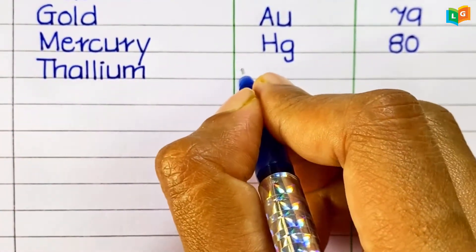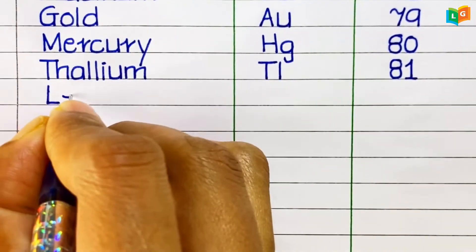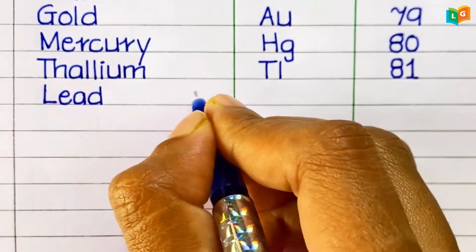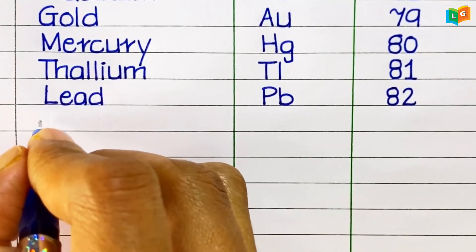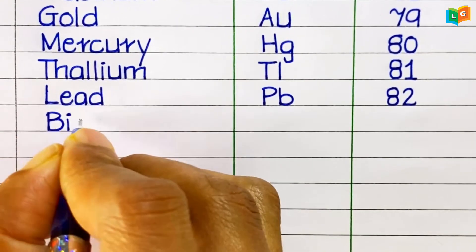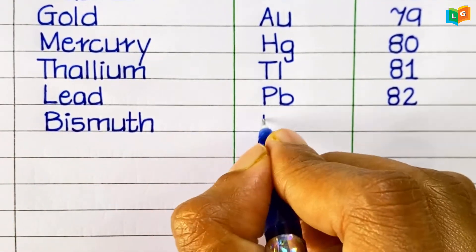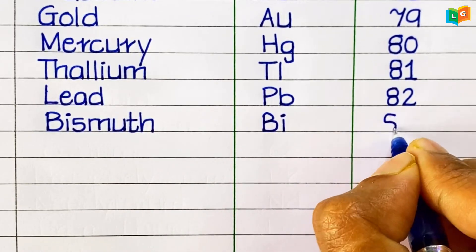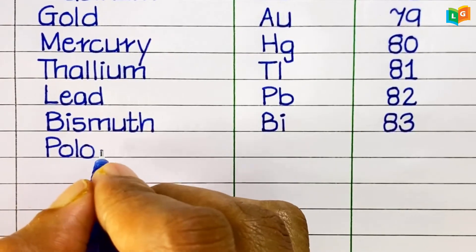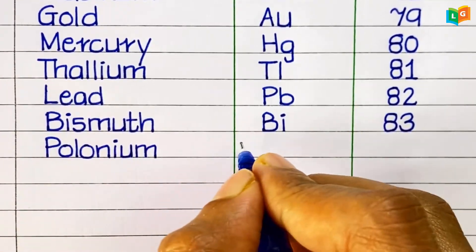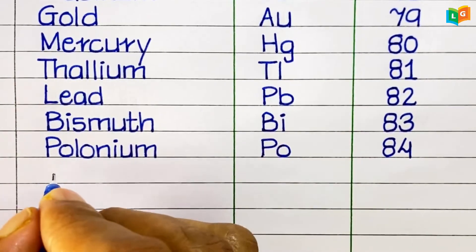Thallium, symbol Tl, atomic number 81. Lead, symbol Pb, atomic number 82. Bismuth, symbol Bi, atomic number 83. Polonium, symbol Po, atomic number 84.